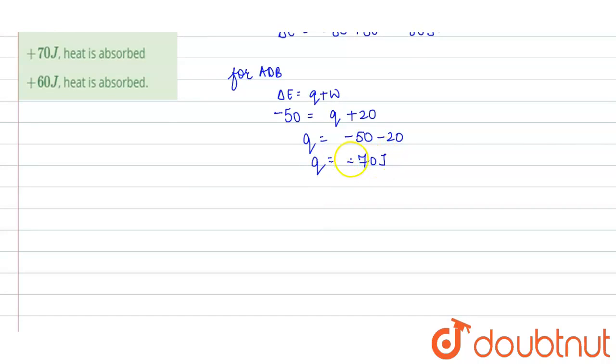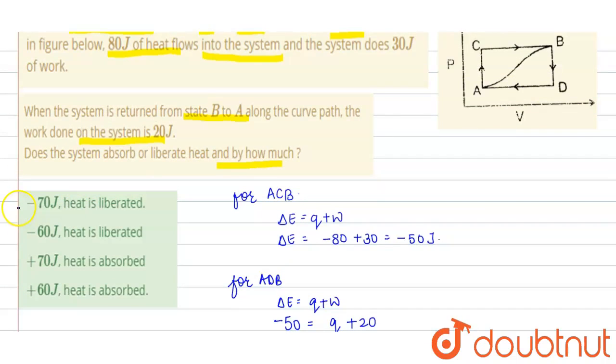minus 70 joules. So negative sign implies that heat is liberated. So your answer is minus 70 joules, means heat is liberated.